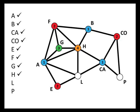Next up we have L. L is connected to a 1, so it can't be color number one, and it's connected to a 2, so it can't be color number two, but it's not connected to any 3s, so L can be color number three. Finally we have P. P is connected to CA, which is colored with number one, so it can't be one. P is connected to CO, which is colored with color number two, so it can't be two, but P can be color number three.